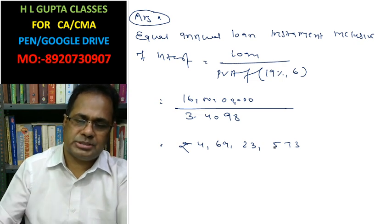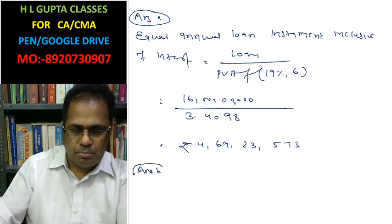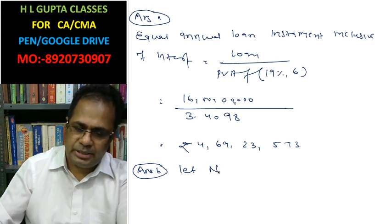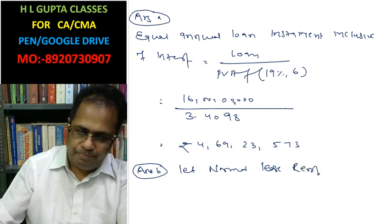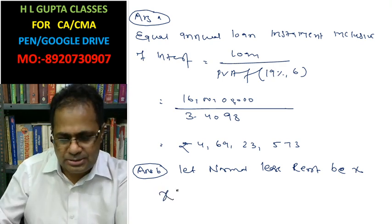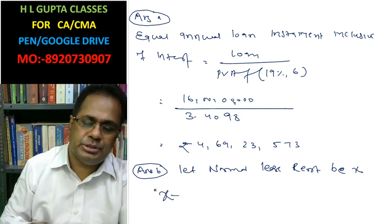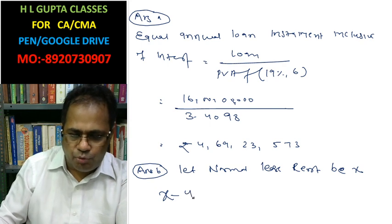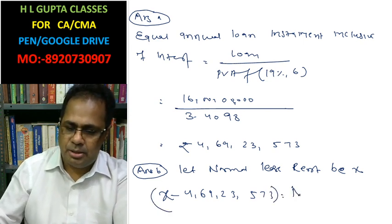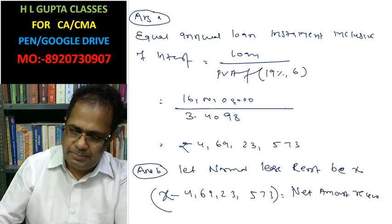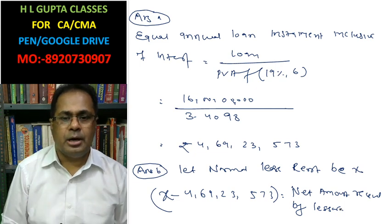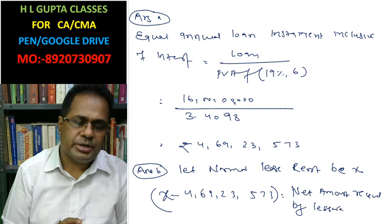For the second part, let the annual lease rent be X. The leasing company will receive X as lease rent, out of which it has to pay the loan installment of rupees 4,69,23,573. The net amount received by the lessor is (X minus 4,69,23,573). The lessor wants a return of 25% over six years.